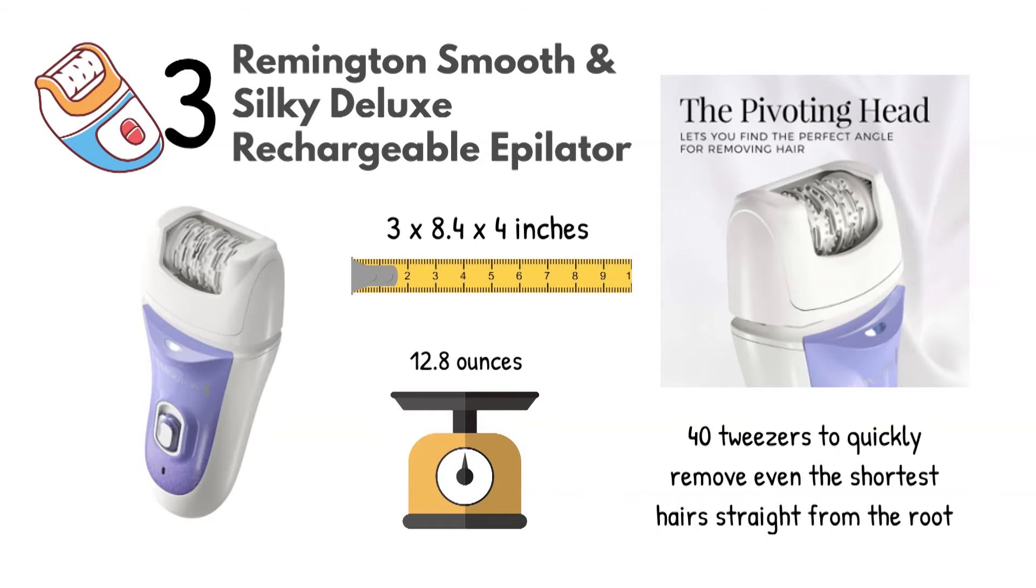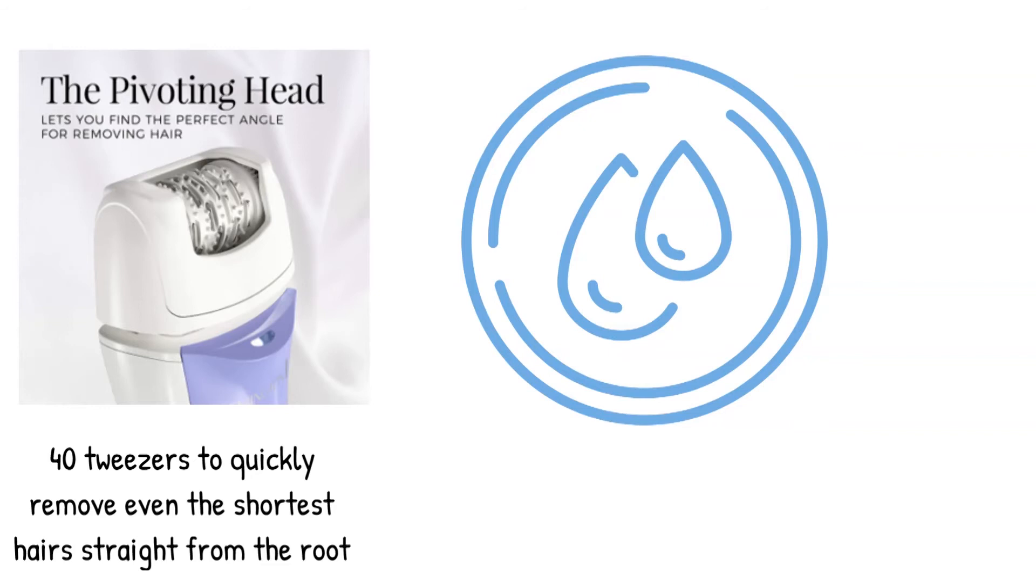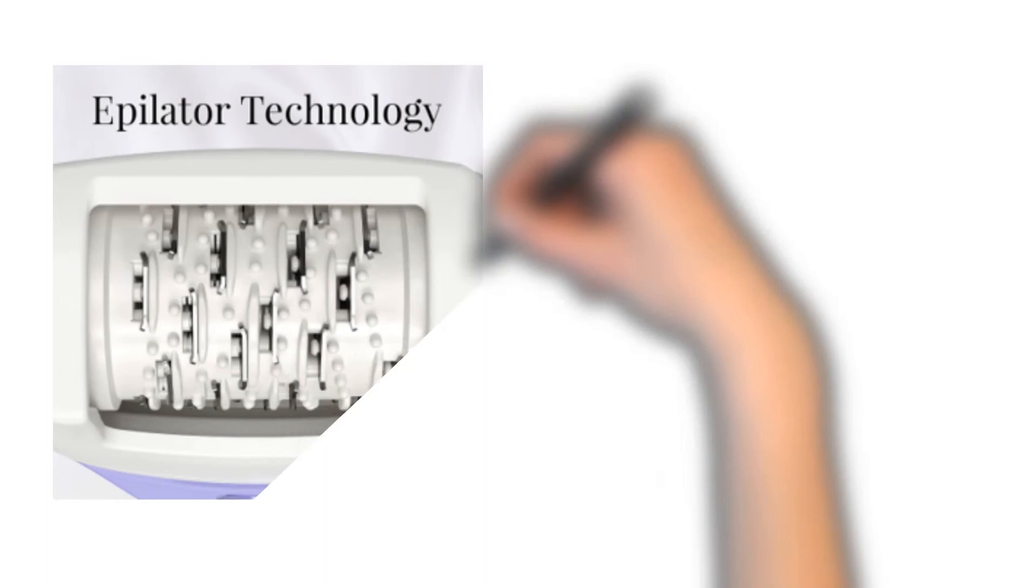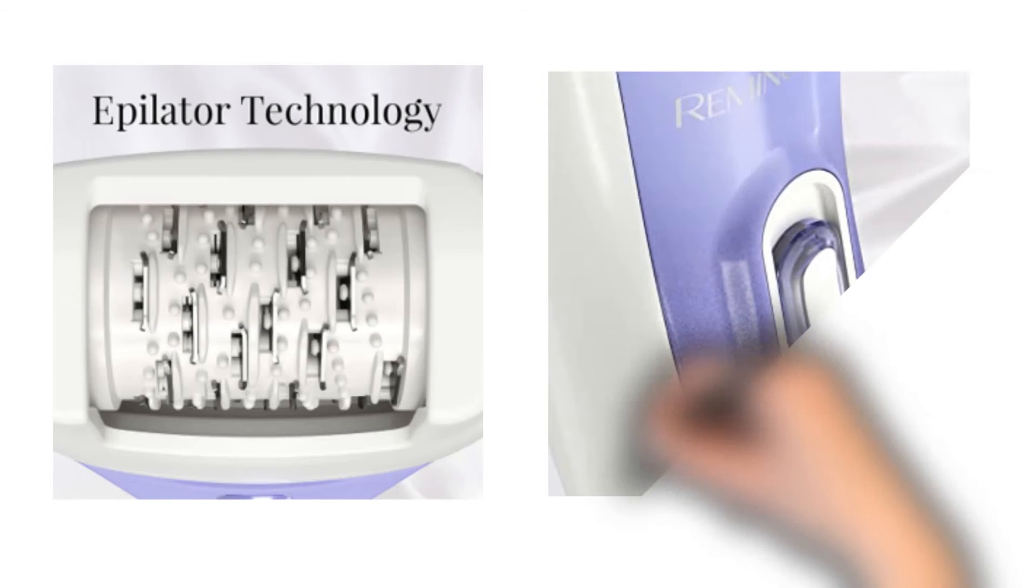The epilator is 100% waterproof so that you can use it in the shower for easy cleanup. The detail light function gives you a clear view of your maintenance areas. The added comfort barrels at the head of the epilator help reduce skin irritation during the hair removal process. Dual speed settings let you find the most comfortable performance.